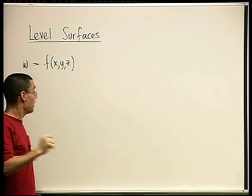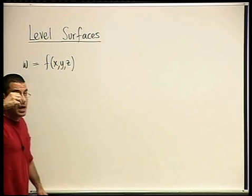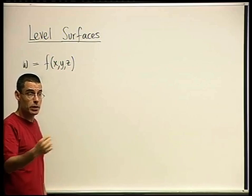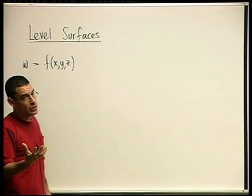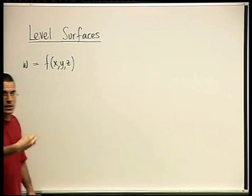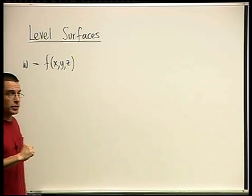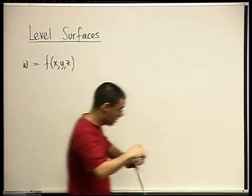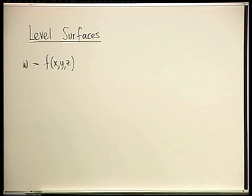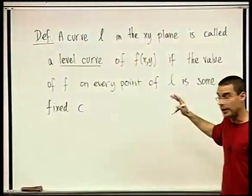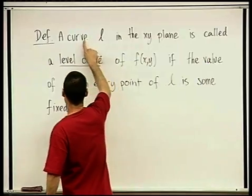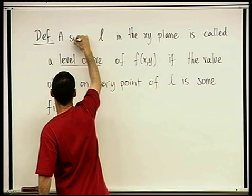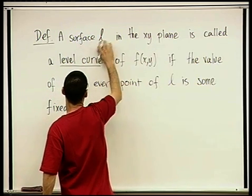So we can still understand the temperature at any given point. And how can we understand it? We're actually mimicking the idea of level curves. And that generalization we're going to call level surfaces. So let's start with the definition. I left here on the board the definition of a level curve, and let's modify it. It's no longer going to be a curve, it's going to be a surface.